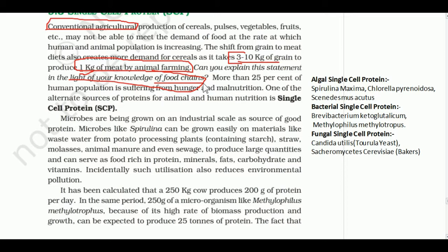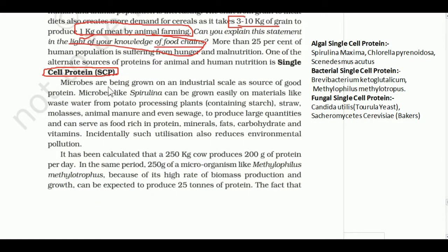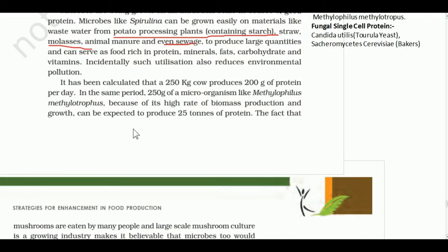More than 25% of human population suffers from hunger and malnutrition. One alternate source of nutrition for plants, animals, and humans is single cell protein (SCP). Microbes are grown on industrial scale as a source of good protein. Microbes like Spirulina can be grown on wastewater, potato processing plant starch, straw, molasses, animal manure, and even sewage, to produce large quantities of food rich in protein, minerals, fats, carbohydrates, and vitamins. This also reduces environmental pollution.